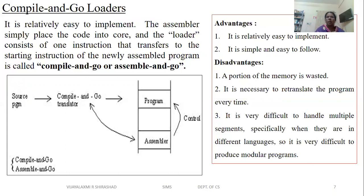The source program is here; the compile and go translator converts all mnemonic code into machine-readable form. The loader loads it into the program — that is, memory. The assembler controls the program which is loaded as object code, because once loaded into memory, it will only read object code, not source code written in mnemonic. This process is called compile and go or assemble and go loader.